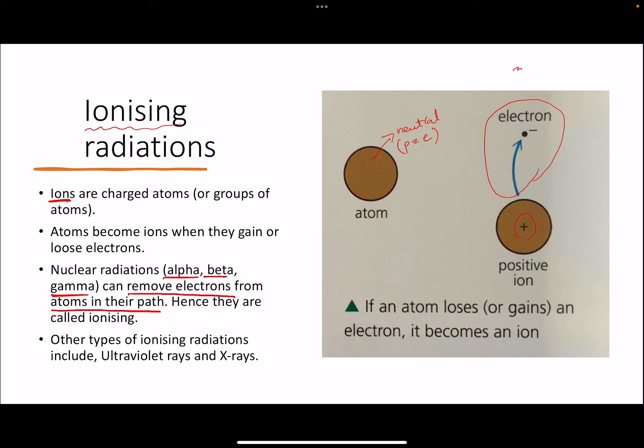Now there are two other ionizing radiations, but they are not nuclear radiations. Those two radiations are ultraviolet and x-rays. These are both electromagnetic waves that you have probably studied in a previous chapter of EM waves. And if you also remember, gamma waves are also electromagnetic waves.